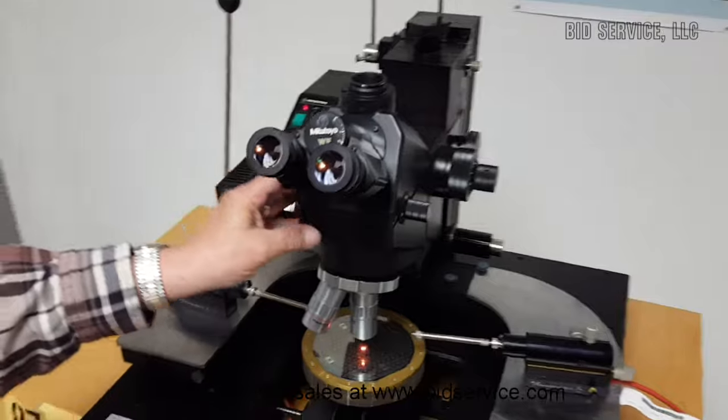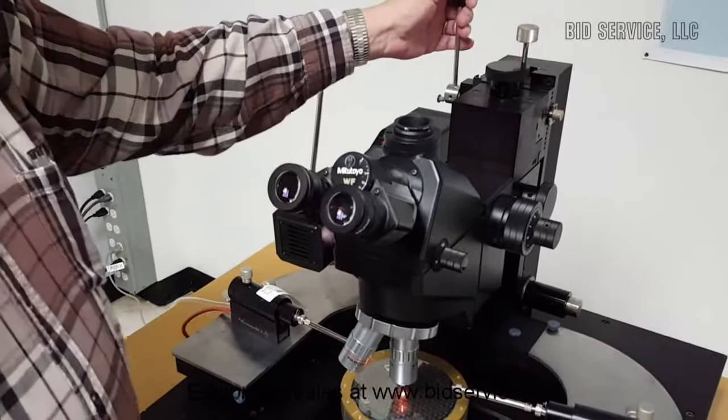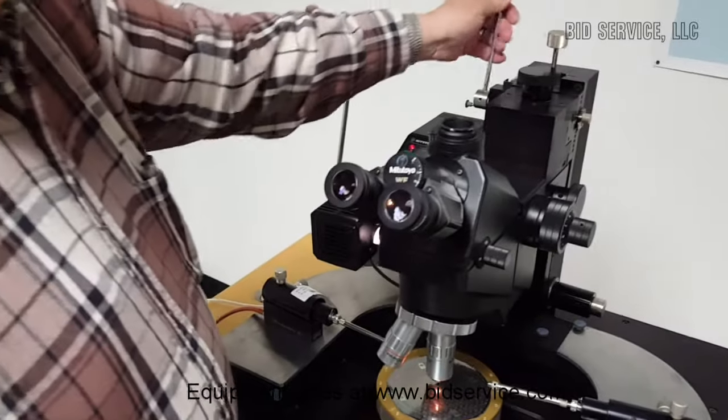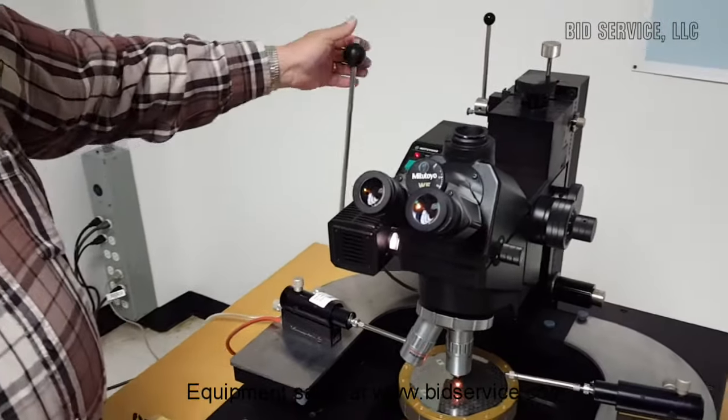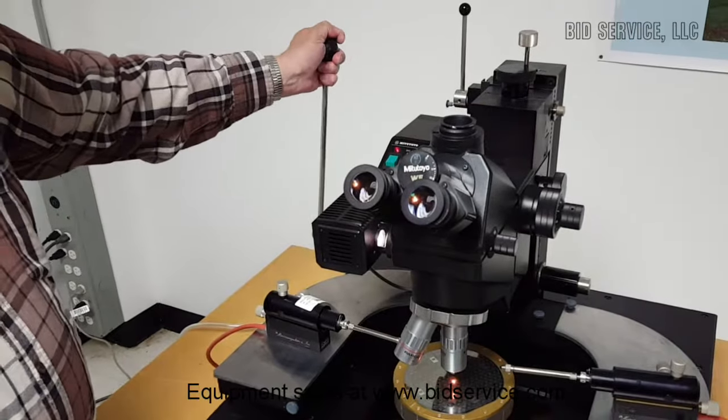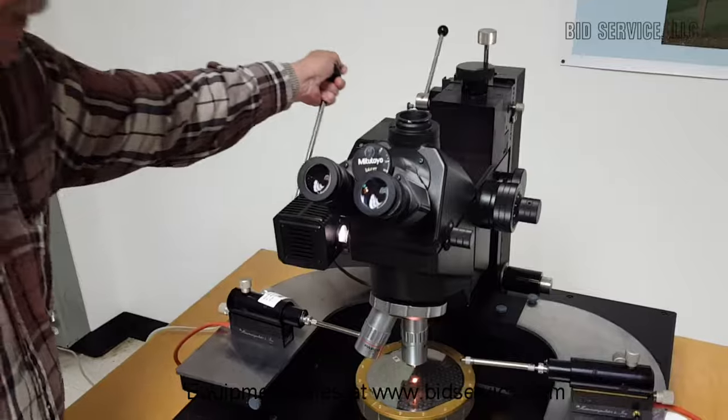This is the Mitutoyo scope. The scope lift is here. The whole platen lift is here.